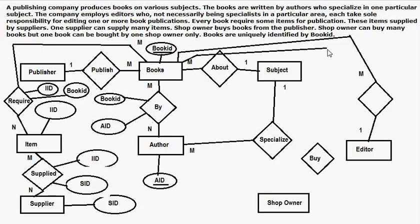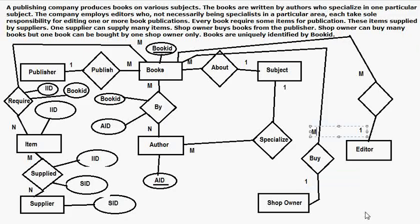A shop owner can buy books from the supplier, and a shop owner can buy many books, but one book — so this is a one-to-many relationship. This is a sample Entity Relationship Diagram for this given problem. In our forthcoming classes I am going to discuss more examples and topics like specialization and generalization. Stay tuned with us, thank you.